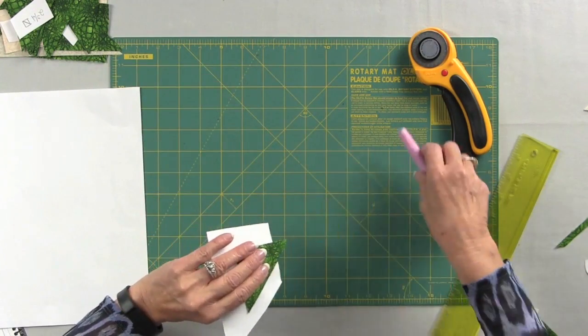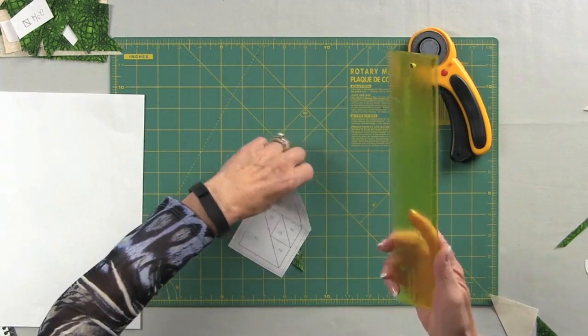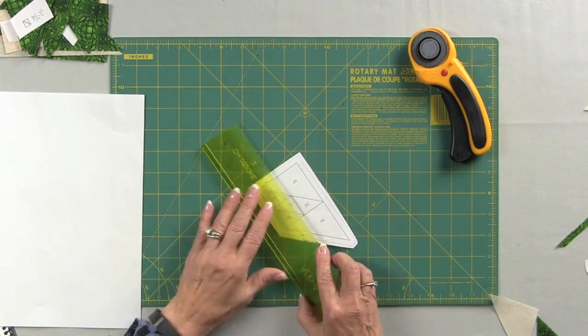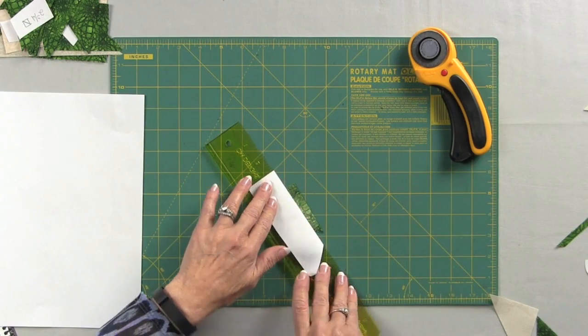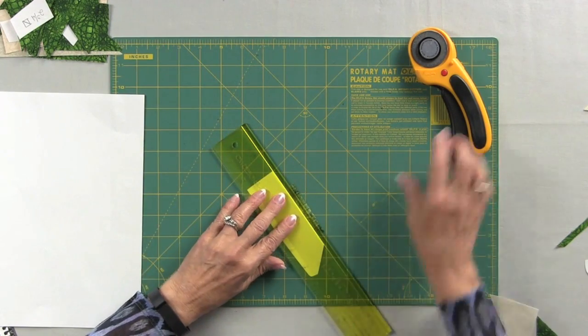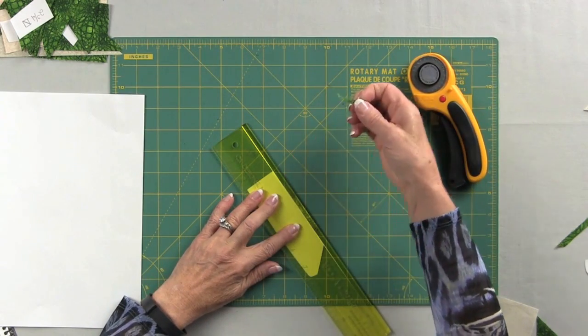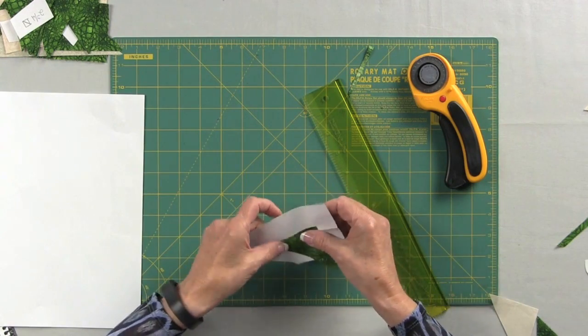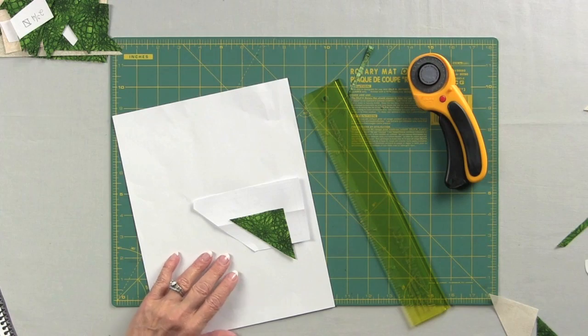Now before you add the next piece, what you need to do is take your Add a Quarter Plus, which has the tapered edge on it, place it on the line between one and two and fold it over and just crease it. Flip the ruler over and trim it off. By doing this you're accomplishing three things. You're getting rid of that extra fabric, giving yourself a quarter inch seam allowance, and it's also giving you a nice straight line so you know where to put your next piece.